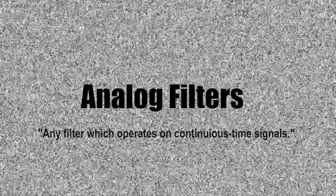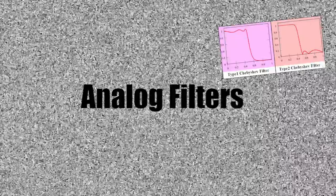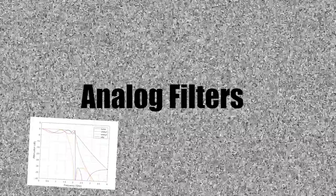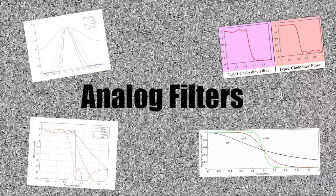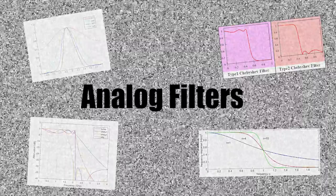This video will briefly discuss a few examples of analog filters. They are basically any filter which operates on continuous time signals. Examples of these are the Butterworth filter, the Chebyshev type 1 and type 2 filter, the elliptic filter, and the Gaussian filter. These four filters are the most common filters that you will likely see in signal processing applications.